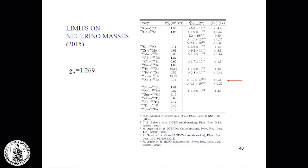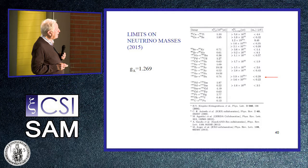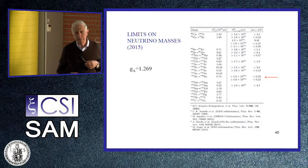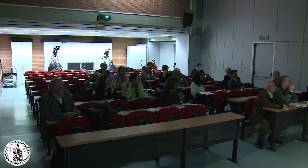The experiments include GERDA, EXO, and KamLAND-Zen. CUORE is not yet listed because it will produce results hopefully within a year. There is also the claim by Klapdor-Kleingrothaus of having observed zero-neutrino double beta decay. The best limit so far comes from KamLAND-Zen, published in 2013, with a limit of 1.9 times 10 to the 25 years, giving a limit on the neutrino mass of less than 0.2 electron volts.